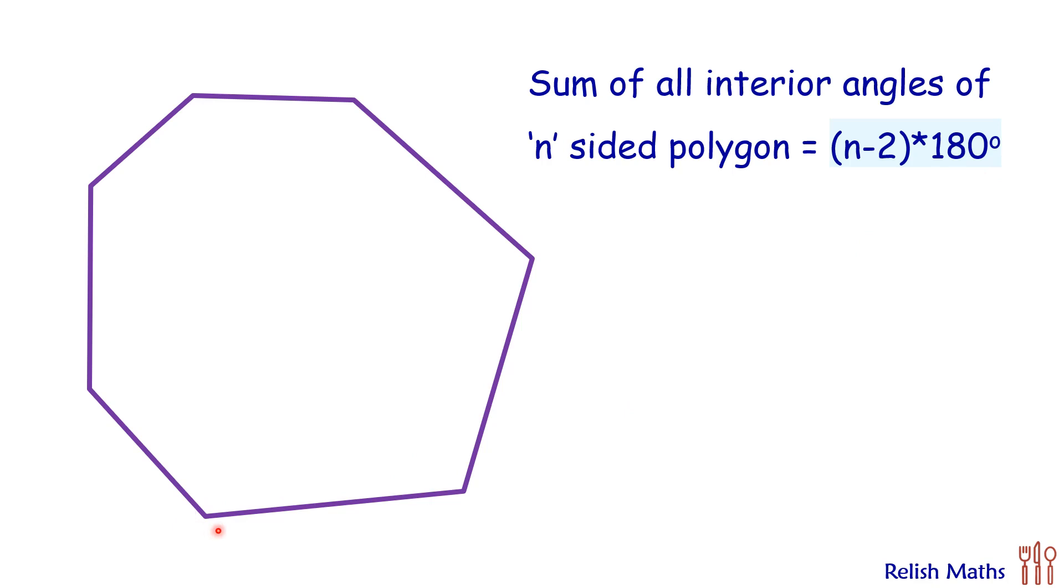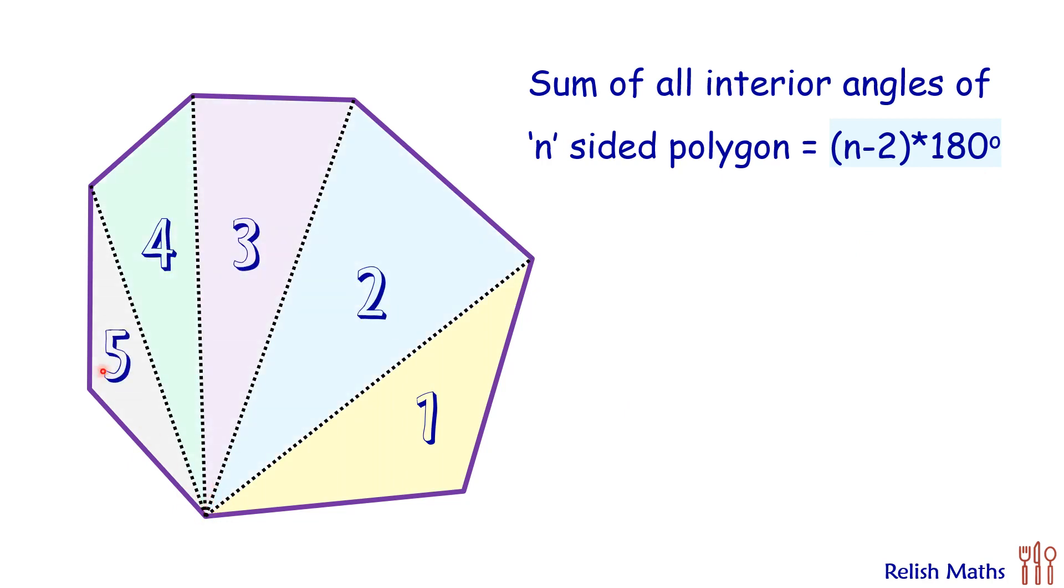The proof of it is very simple. From any one vertex, draw all possible diagonals. The given polygon gets divided into n-2 triangles. So here it was a 7-sided polygon and it got divided into 5 triangles. Now each triangle, the sum of angles is 180 and thus for the polygon, the sum of angles will be 5 times 180. And if it's an n-sided polygon, we will get n-2 triangles and the sum will be n-2 times 180.